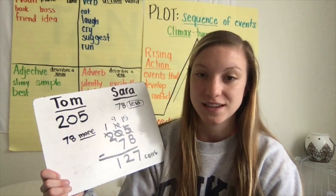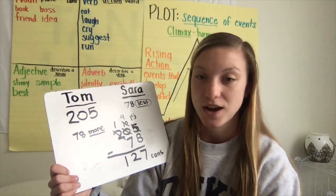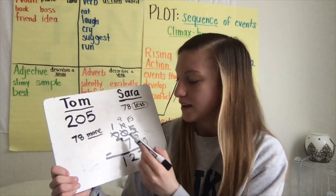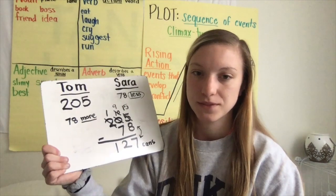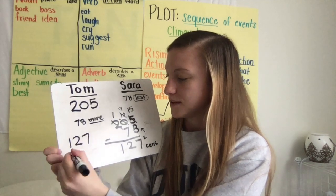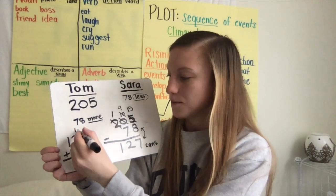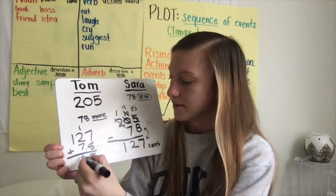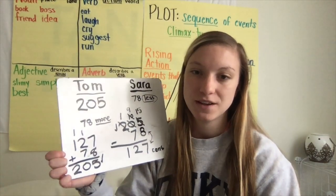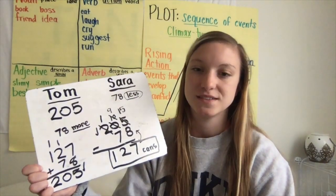To make sure this answer is correct, I can check my work by doing the inverse operation of subtraction, which is addition. I can add these two numbers together and the sum should be the total we started with: 205. So if I do 127 plus 78 — 7 plus 8 is 15, 1 plus 2 is 3 plus 7 is 10, 1 plus 1 is 2 — we get 205. I checked my work and our answer is correct: Sarah collected 127 cans.